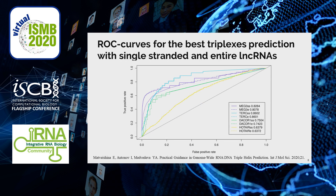Here are ROC curves for the best triplex predictions for entire lncRNAs and their single-stranded fragments. Numbers in the legend represent the area under the ROC curve. Secondary structure usage leads to the greatest quality improvement in the MEX3 case, with the second-best improvement for DACR1, while improvement for TERC and HOTAIR is very moderate.